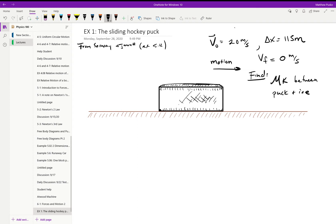Alright, let's do a problem. We have a hockey puck given, and it has an initial velocity somehow, so someone slapped it with a stick and it's going 20 meters per second. We know that it travels 115 meters and then comes to a stop.